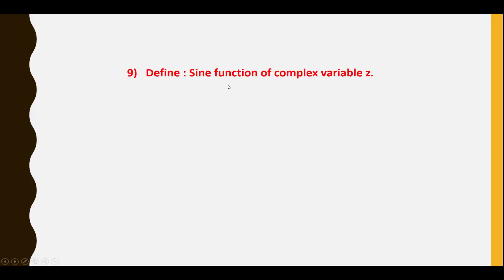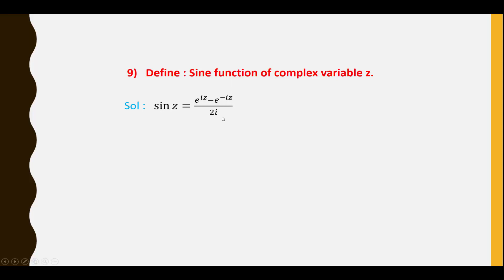Ninth question: Define the sine function of complex variable Z. sin Z = (e^(iZ) − e^(−iZ)) / (2i).